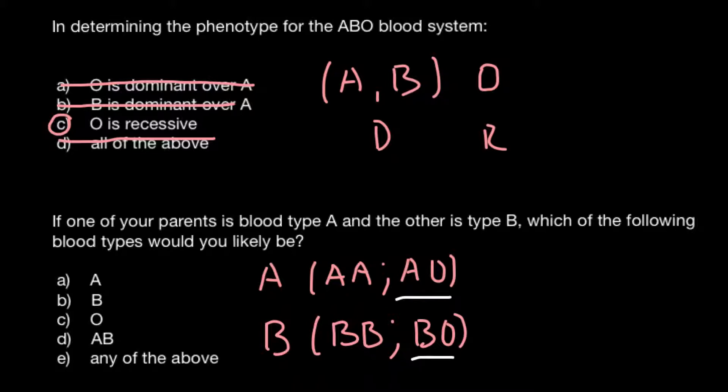For example, if we build a Punnett square and we use one blood group or genotype that is AO - and this is blood group A on the top - and another genotype for blood group B, BO, on the side, and when we build a Punnett square...